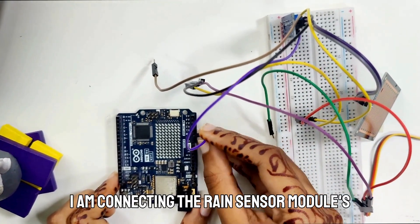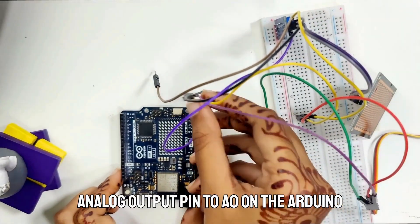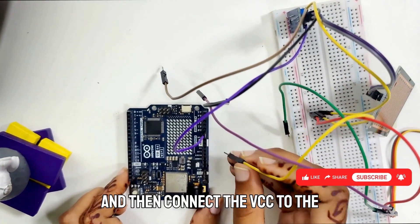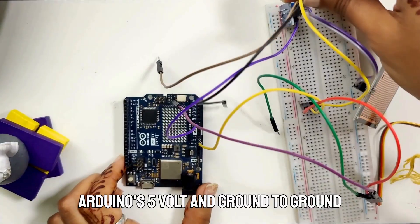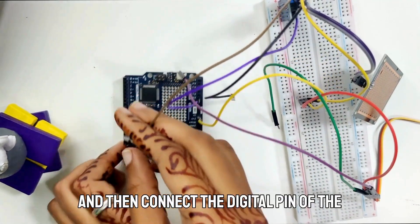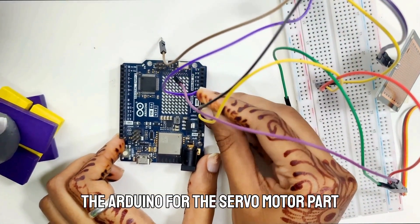I am connecting the rain sensor module's analog output pin to A0 on the Arduino. And then connect the VCC to the Arduino's 5V and ground to ground, and then connect the digital pin of the rain sensor module to the D11 on the Arduino.